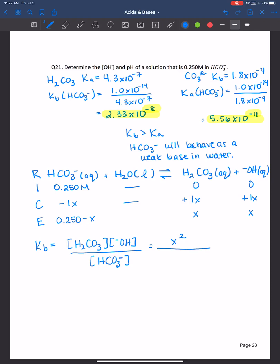So x squared over 0.250 minus x is equal to the Kb, which we determined to be 2.33 times 10 to the negative 8th. I'm going to assume x is small enough to ignore. And when you solve for x, you should get 7.632 times 10 to the negative 5th. Check that it's a valid assumption. And it definitely is. X is definitely less than 5% of the initial concentration. So we don't need to use the quadratic formula here.